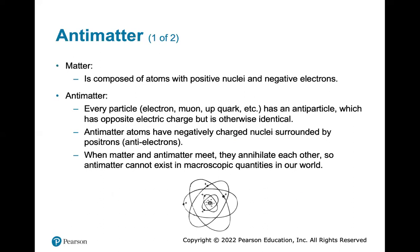They discuss matter and antimatter. Matter is composed of atoms with positive nuclei and negative electrons. Antimatter — every particle, electron, muon, up quark, down quark, etc. — has an antiparticle with opposite electric charge but is otherwise identical. Antimatter atoms have negatively charged nuclei surrounded by positrons, or antielectrons. When matter and antimatter meet, they annihilate each other, so antimatter cannot exist in macroscopic quantities in our world — it is very short-lived because of the presence of regular matter.